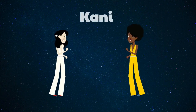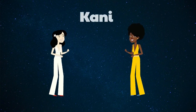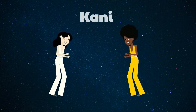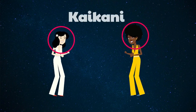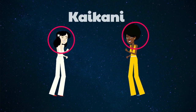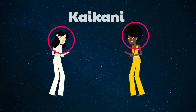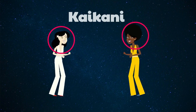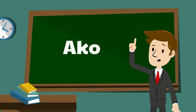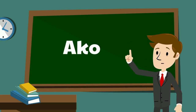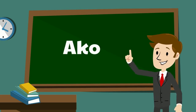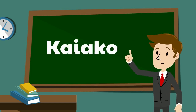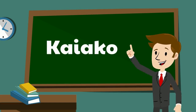'Kani' means to dance, so 'kai kani' means dancer. 'Ako' means to learn, but it also means to teach, and that's why 'kaiako' means teacher.